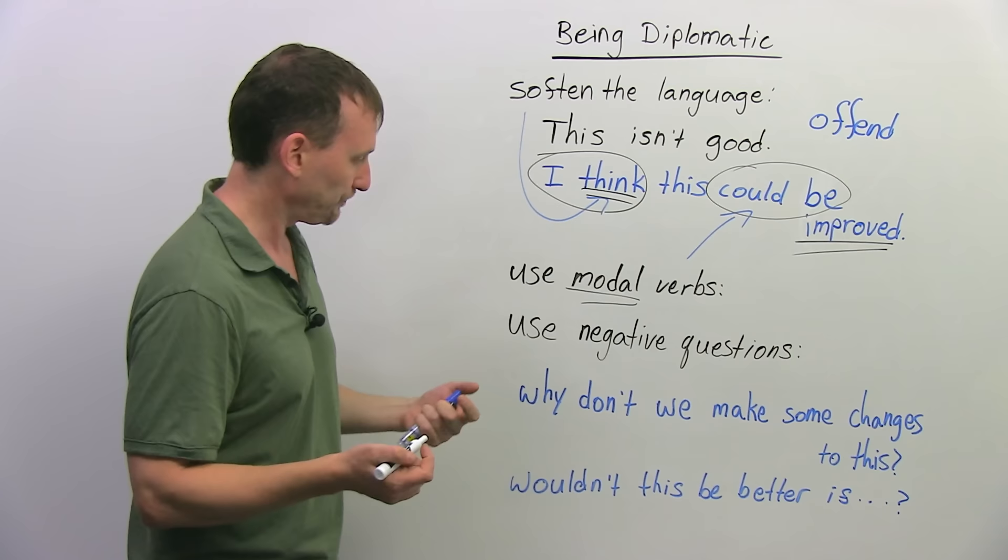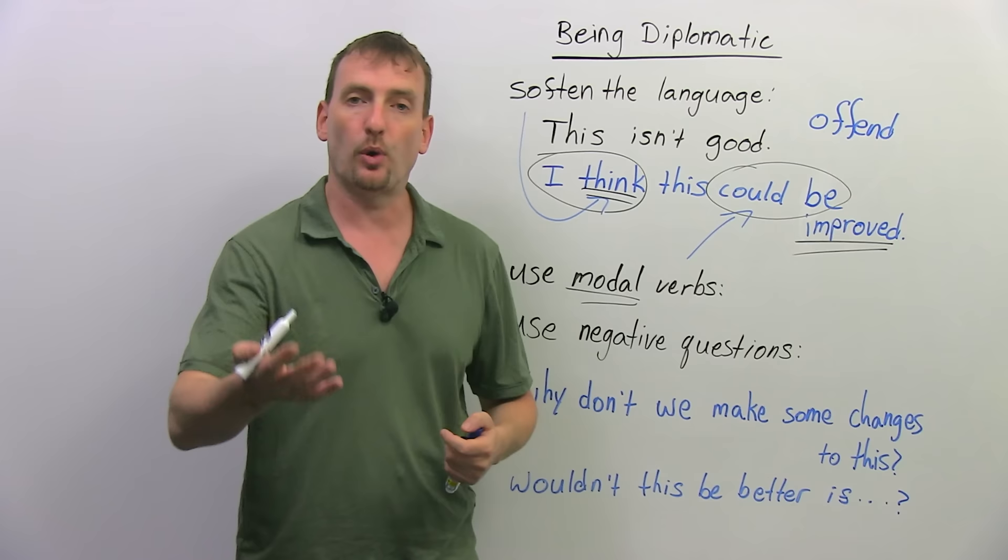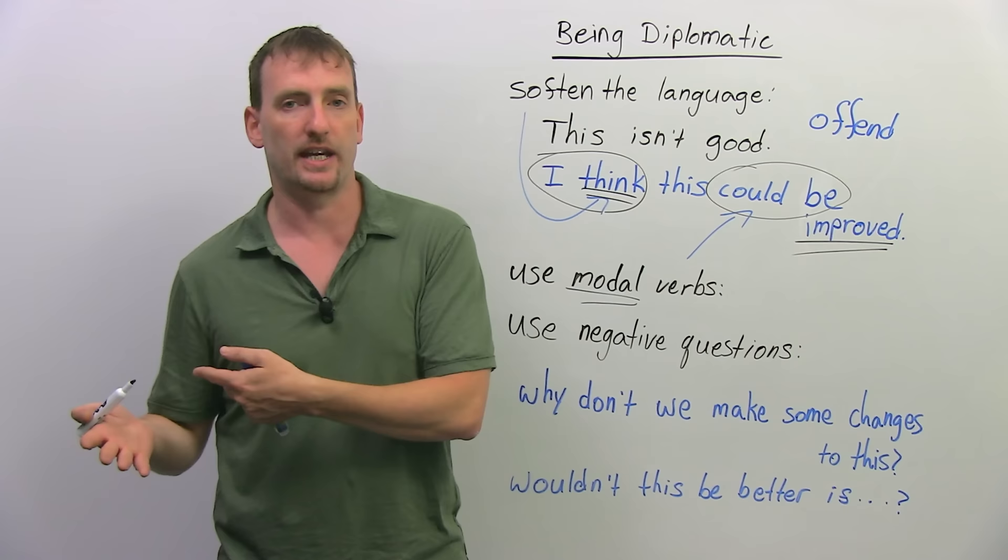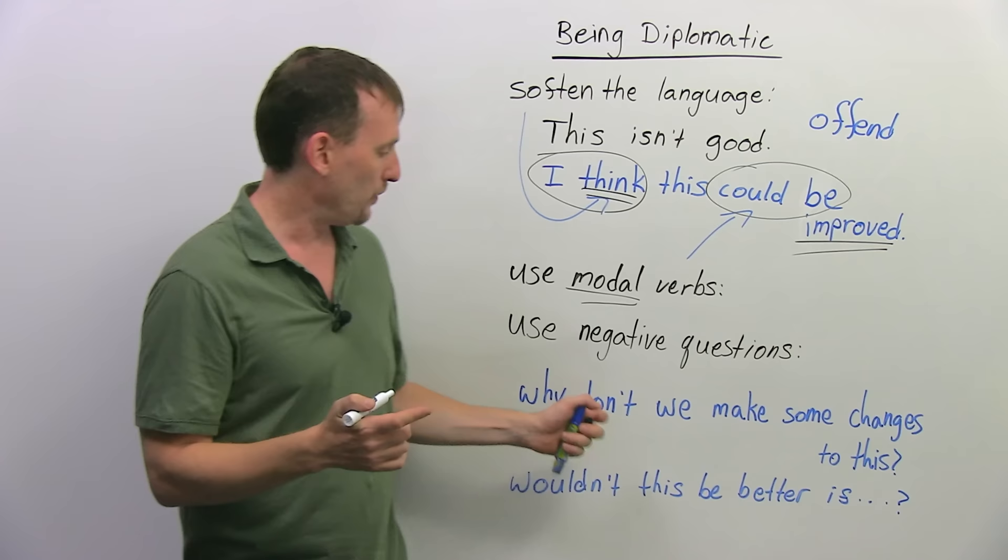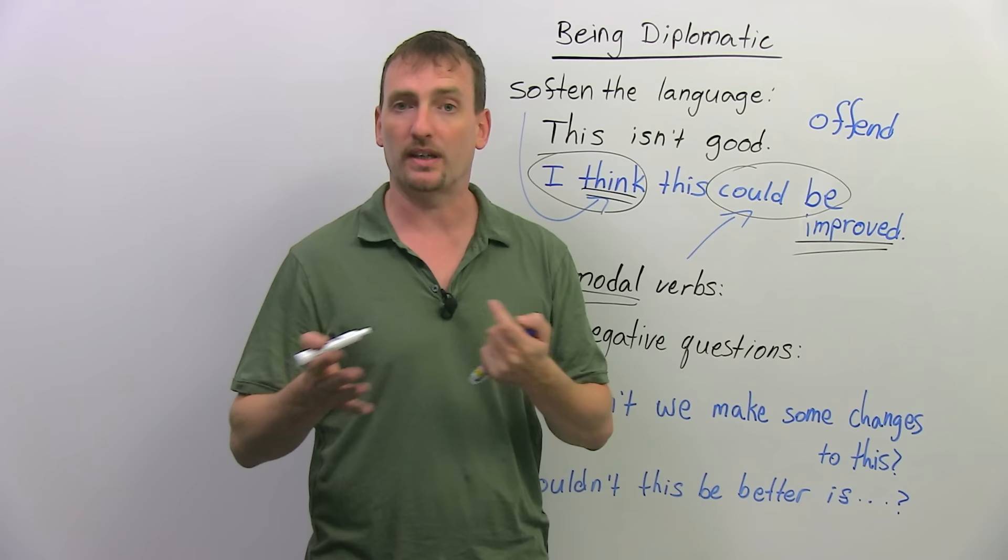Another thing you can do is use negative questions. Instead of saying, this isn't good, well, why don't we make some changes? Why don't we basically means I'm offering you the opportunity, or the possibility, to make some changes. I'm not saying you have to, but when I ask you a question like this, why don't we make some changes to this, automatically you understand that it's not good as it is.